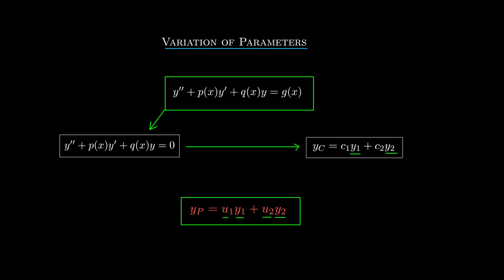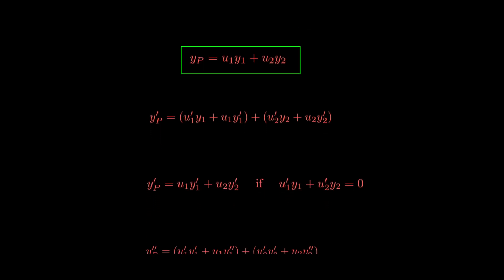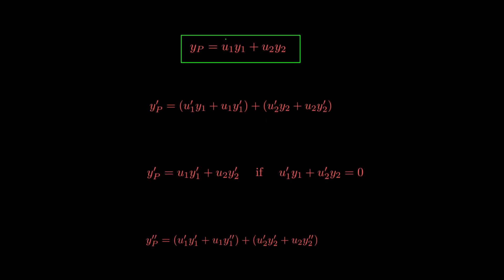The idea is that we're going to try and solve for these two functions, u1 and u2, because if we can solve for them, then we can find the particular solution. So we begin with a particular solution of this form and try to find conditions on it. If this is our particular solution, then the form of the first derivative is given here.